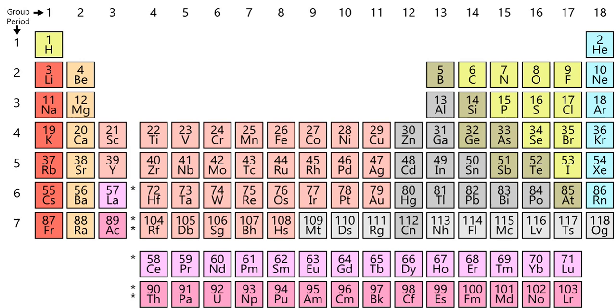Two earlier group number systems exist: CAS and Old IUPAC. Both use numerals and letters A and B. Both systems agree on the numbers.